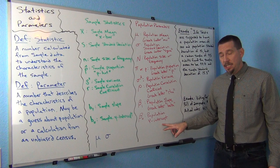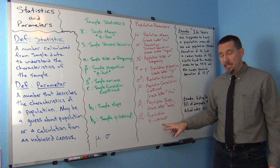All of these letters — x-bar, s, n, p-hat, r, b1, b0 — are statistics, numbers we get from sample data. All the Greek letters — mu, sigma, N, pi, rho, beta 1, beta 0 — are the population parameters.